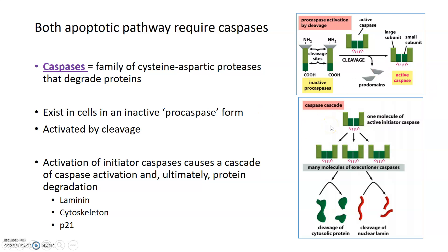In a cell responding to an apoptotic signal, there's a cascade of caspase activation starting with one activated initiator caspase that leads to downstream cleavage of more inactive pro-caspases, which then become activated and degrade proteins. This works like a signaling or phosphorylation cascade, where one initiator transduces the signal for cell death by activating downstream signaling molecules. Some proteins cleaved by caspases include lamin, which makes up the nuclear lamina, cytoskeletal proteins, and cell cycle regulators like the cyclin-dependent kinase inhibitor p21.